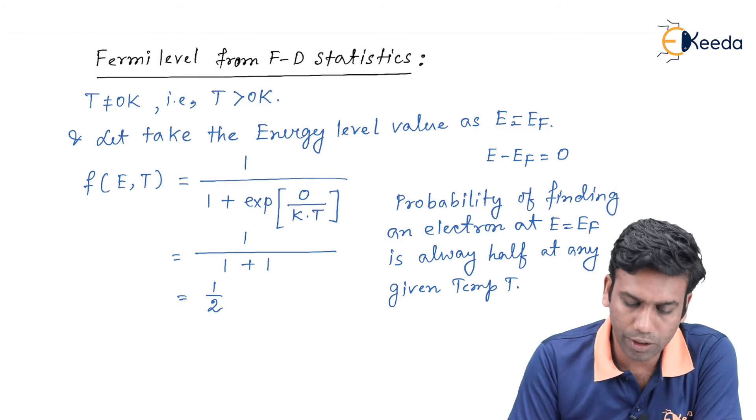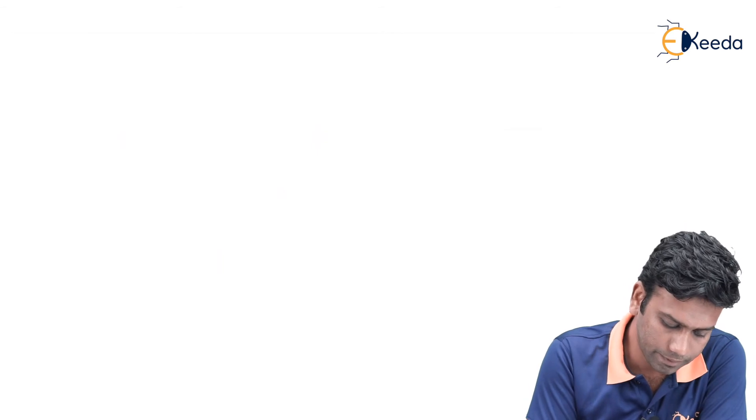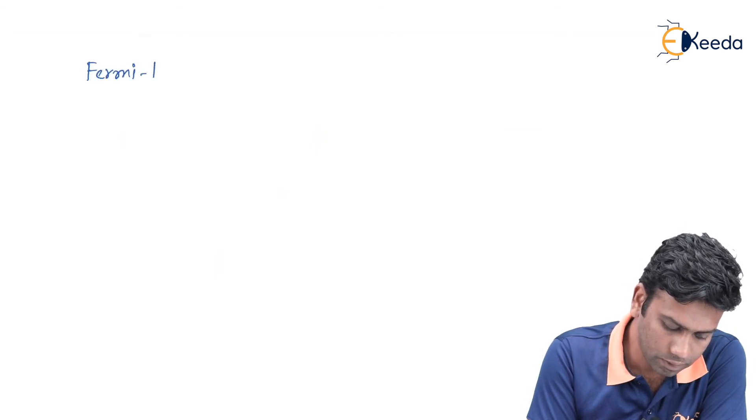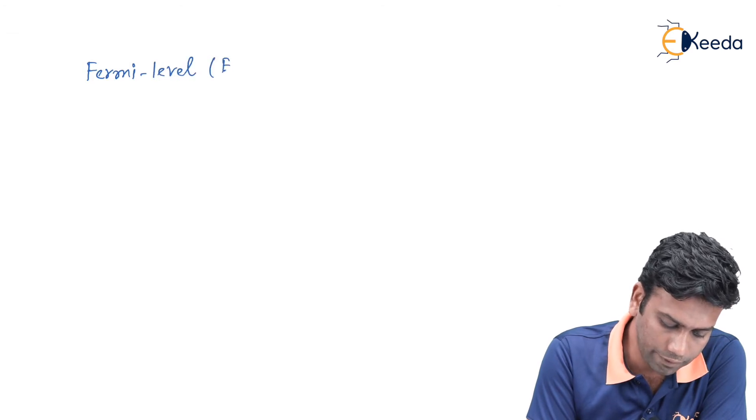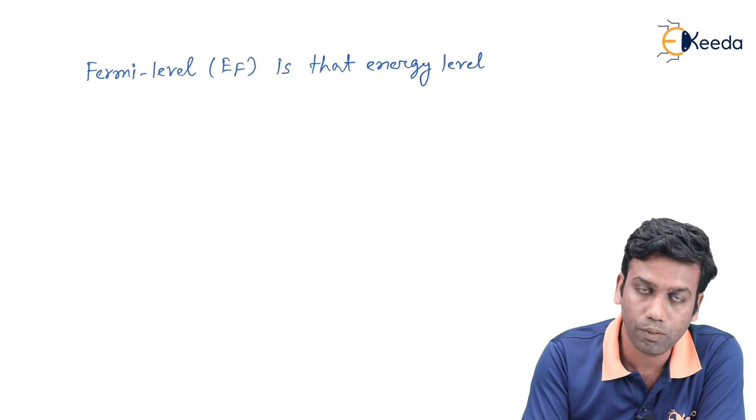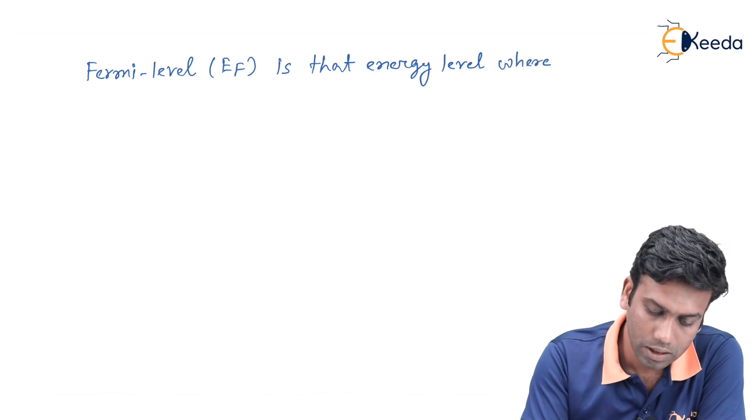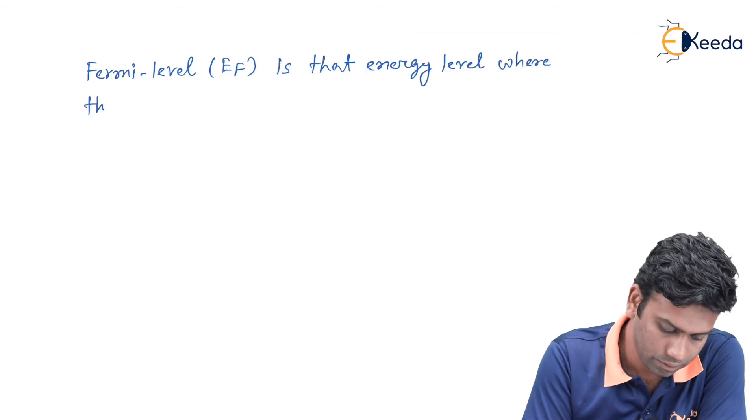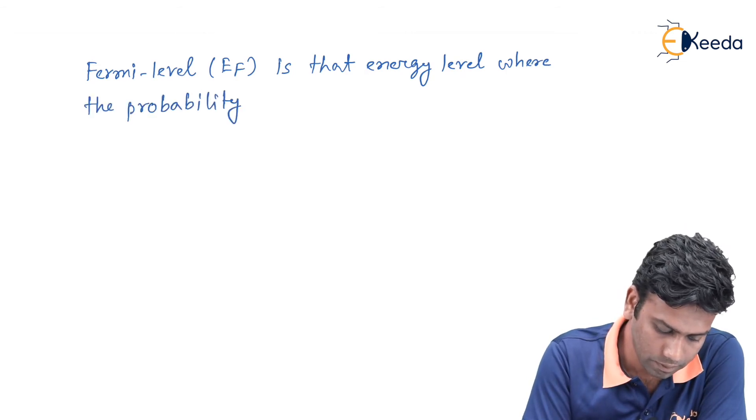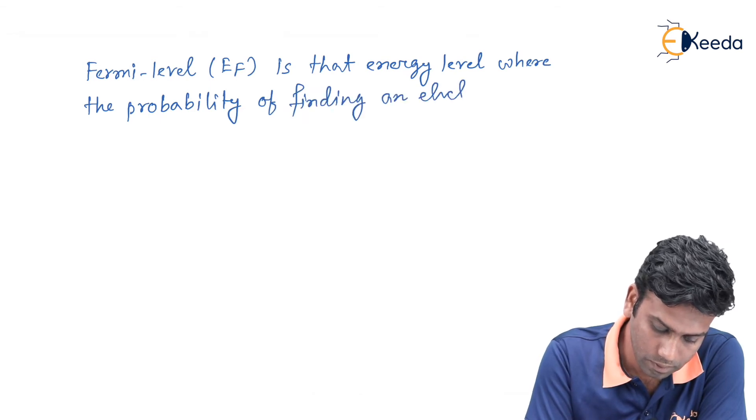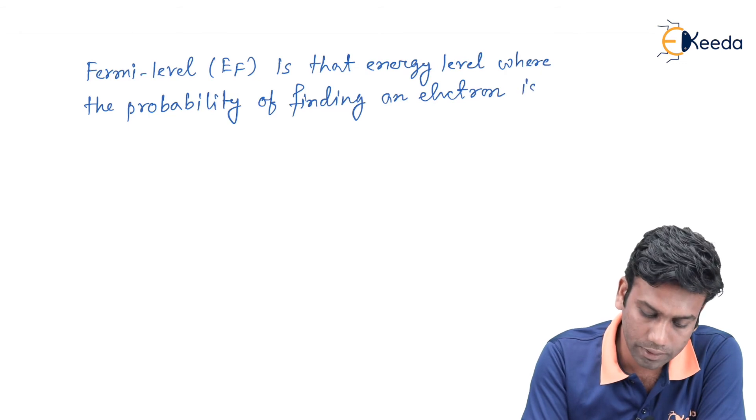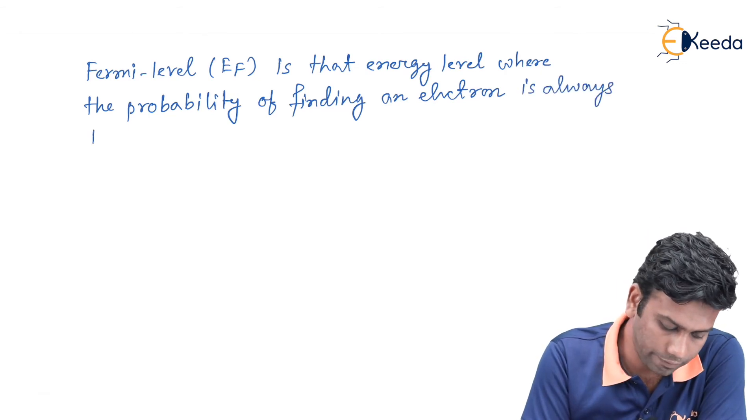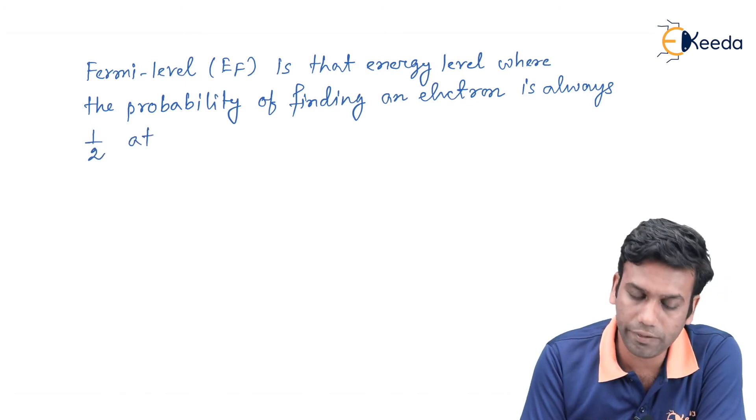From this conclusion, we can define the Fermi level energy level. The Fermi level, that is Ef, is that energy level where the probability of finding an electron is always half at any given temperature.